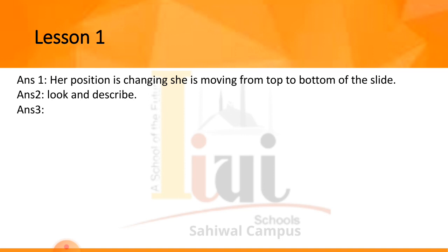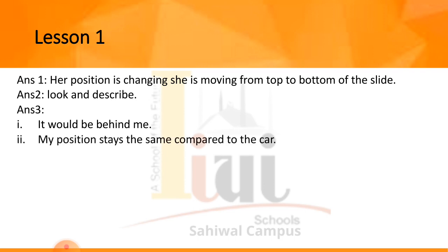If you were riding in the white car, the blue car would appear to move toward you. Once you passed it, the blue car would be behind you. If a car near your car moves with the same speed and in the same direction, your position stays the same compared to that car.